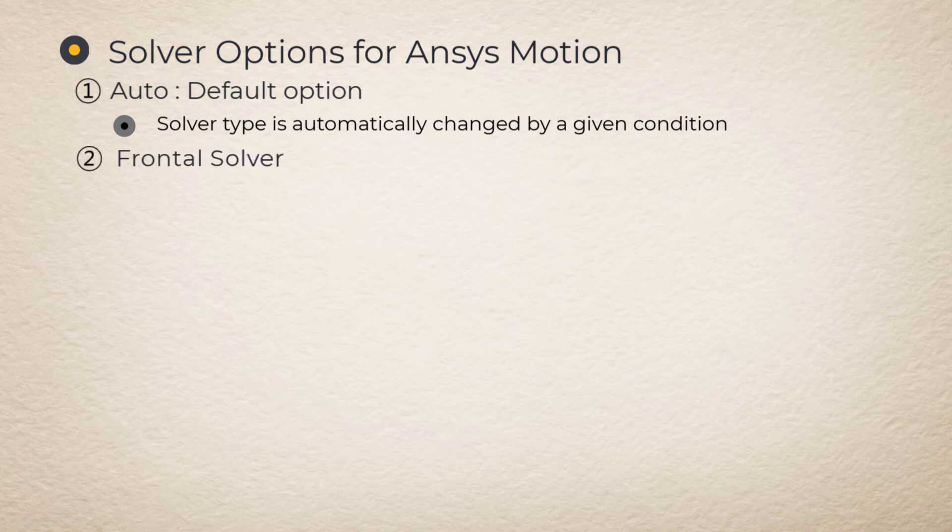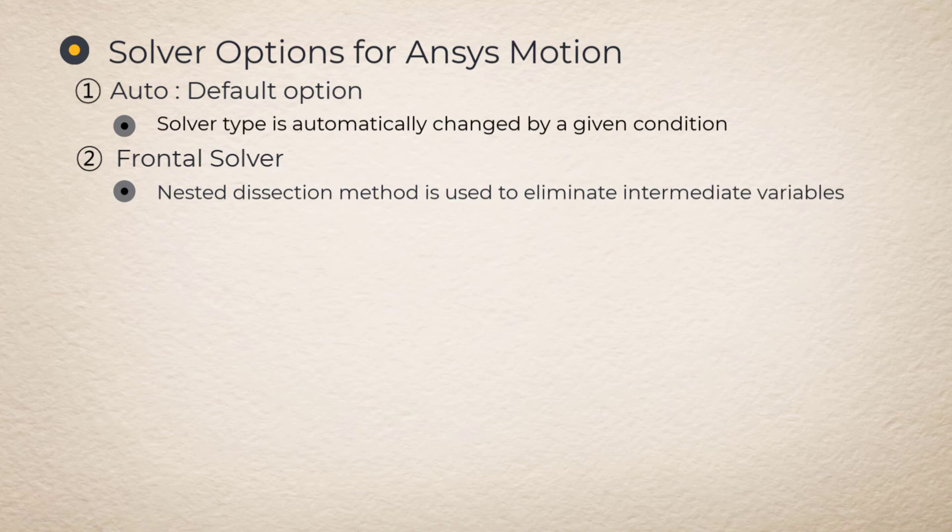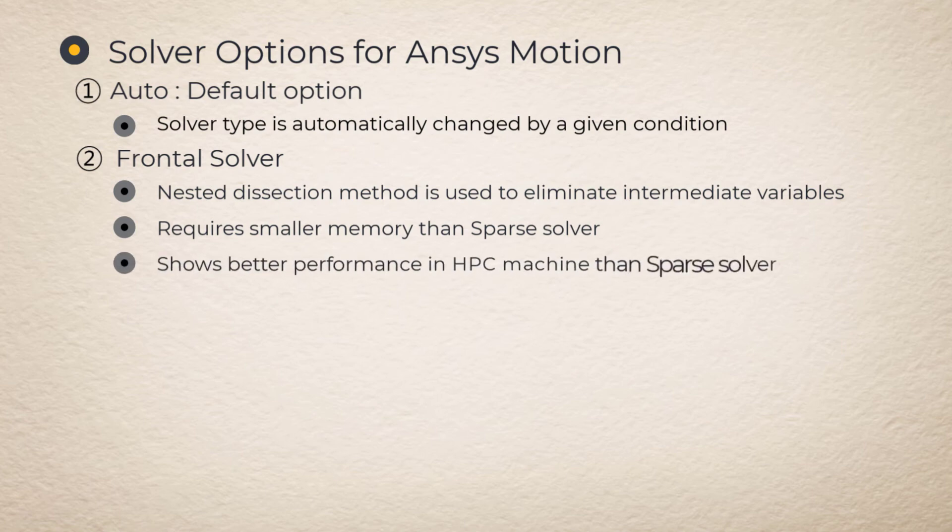Frontal solver option. This option uses the nested dissection method to eliminate the intermediate variables of the system equations. Since this method does not save the intermediate values, it requires a smaller memory than that of sparse solver option. When this option is used on HPC machines, its performance is better than the sparse solver option.